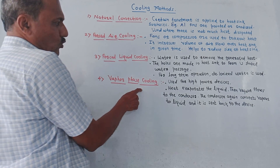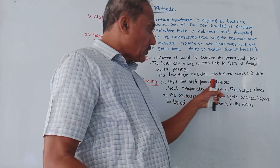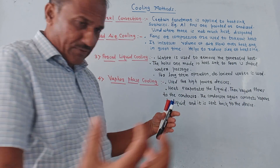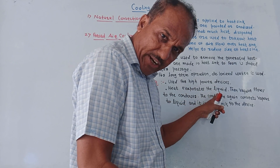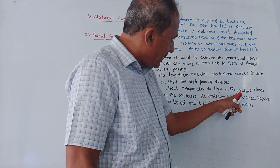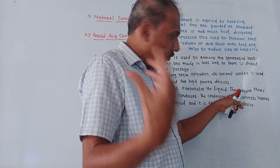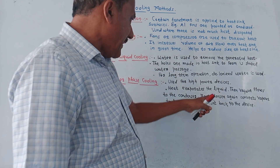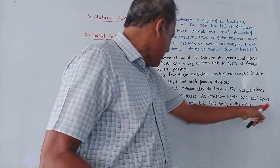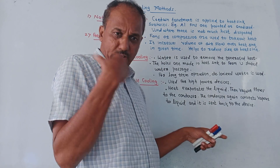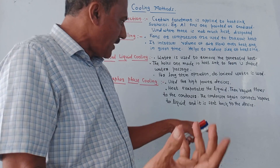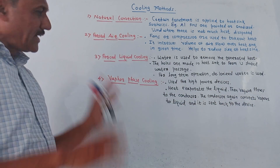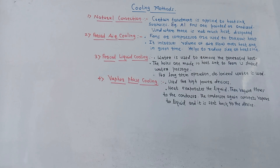The fourth method is vapor phase cooling, used in case of high power devices. Whatever heat is developed across the device evaporates the liquid. The vapor generated due to evaporation flows to a condenser where it gets cooled down. The condenser converts the vapor back into liquid, and that cooled liquid is then sent back to the device.